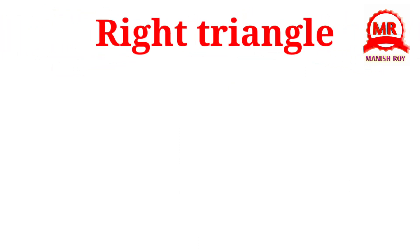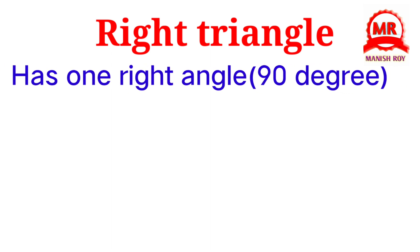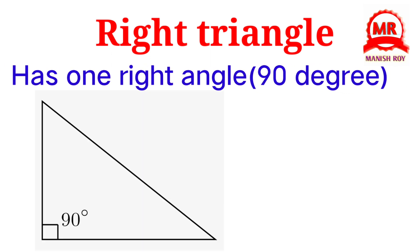Right triangle. A right triangle has one right angle. In this figure, one of the angles of this triangle is 90 degrees, so it is called a right triangle.